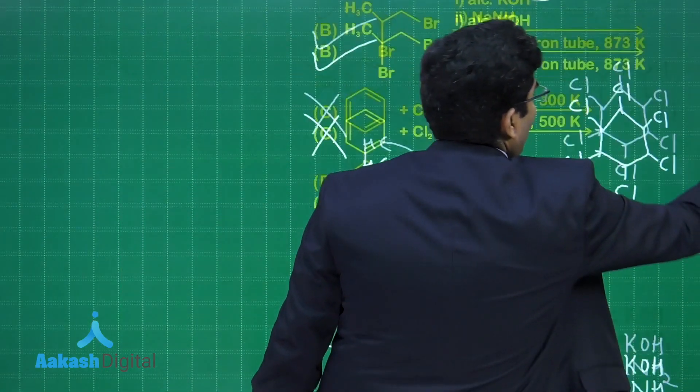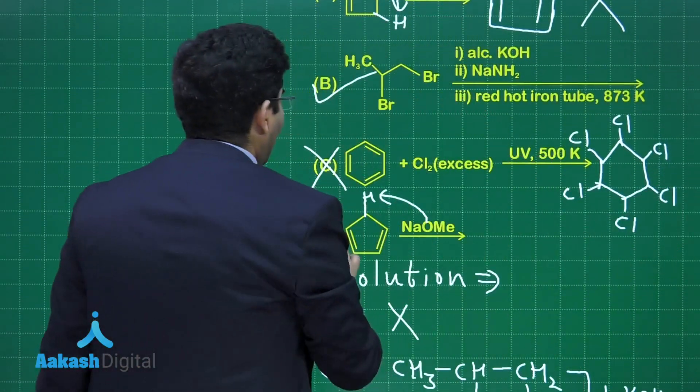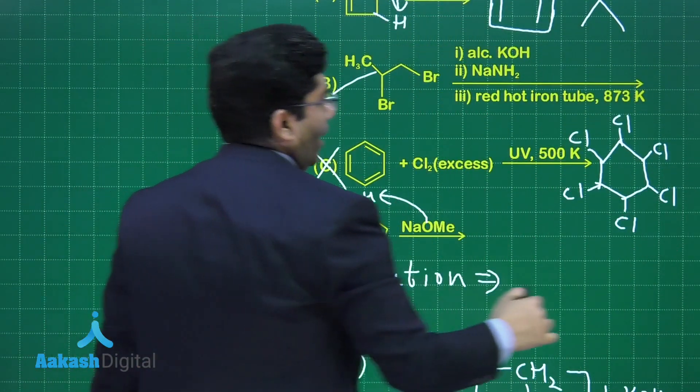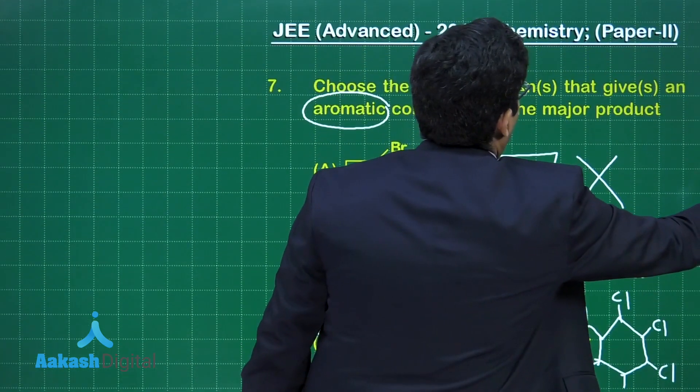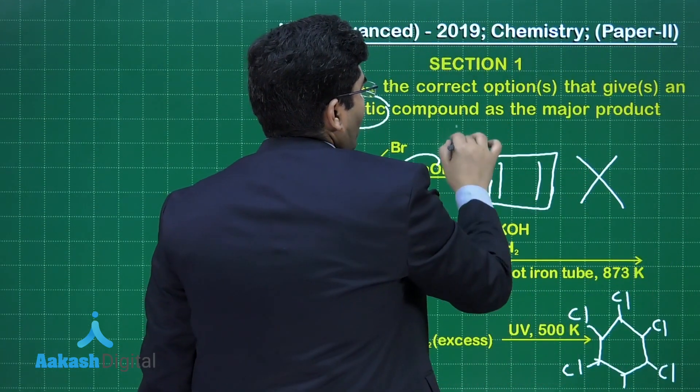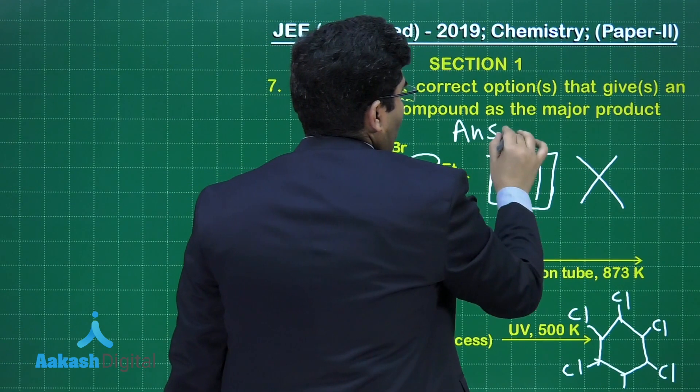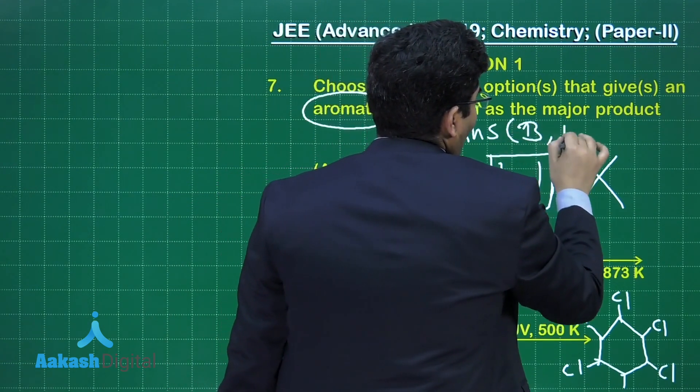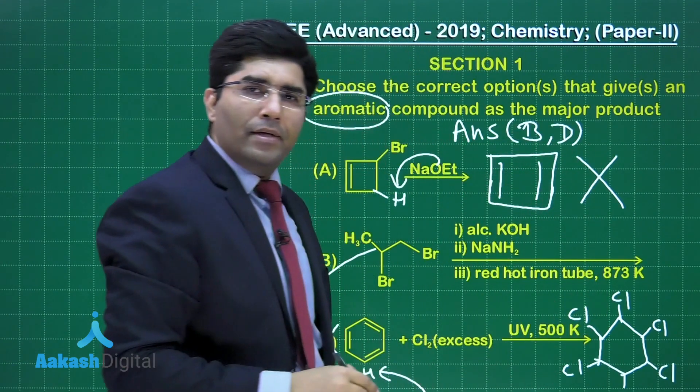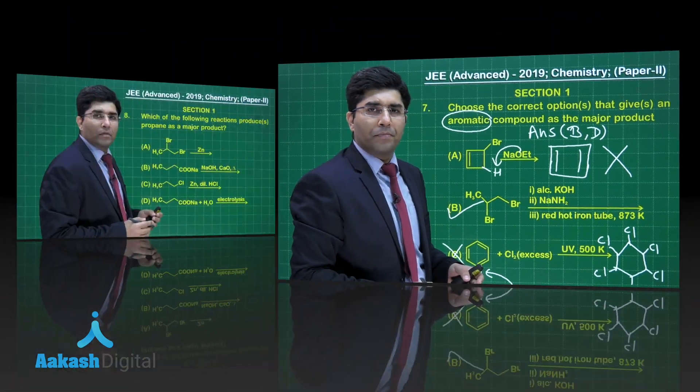It means that we have two options which are correct. One is B, another is D. That is why the answer is option number B as well as D. Let us move on to the next question.